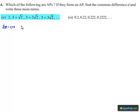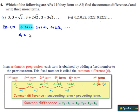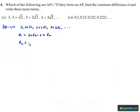Here, the series is given as 3, 3 plus root 2, 3 plus 2 root 2, 3 plus 3 root 2, and so on. Let us note down the common difference between the second and first term, that is (3 + √2) − 3, which is nothing but root 2.